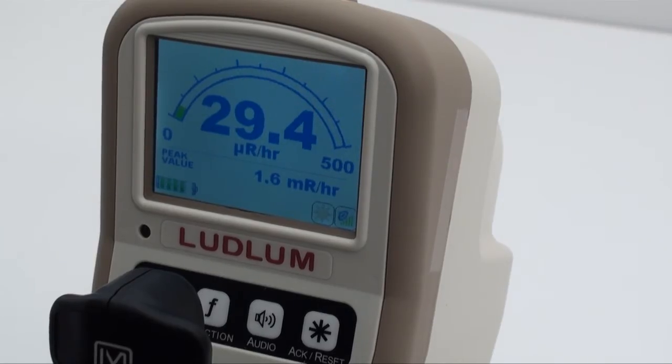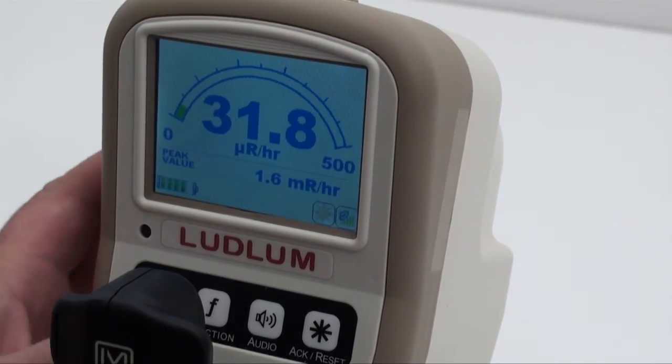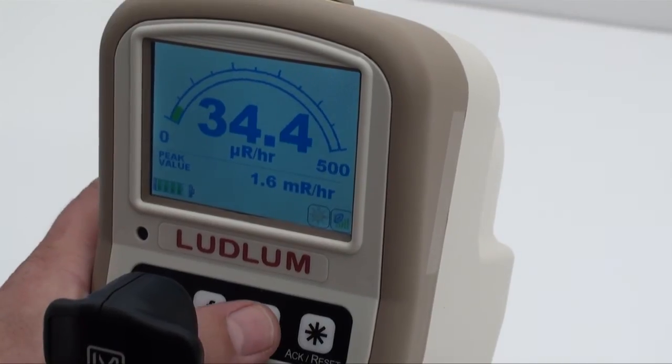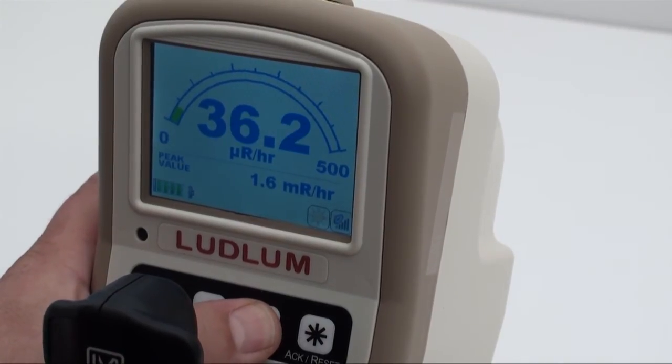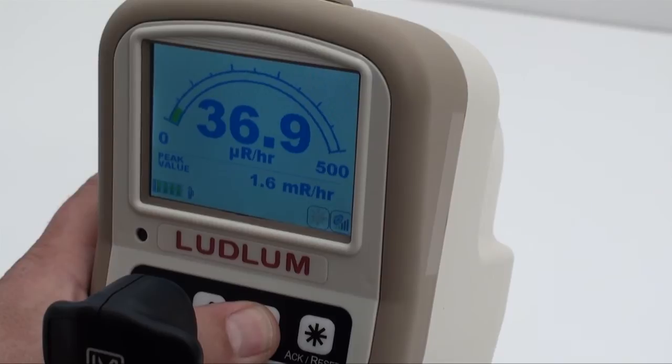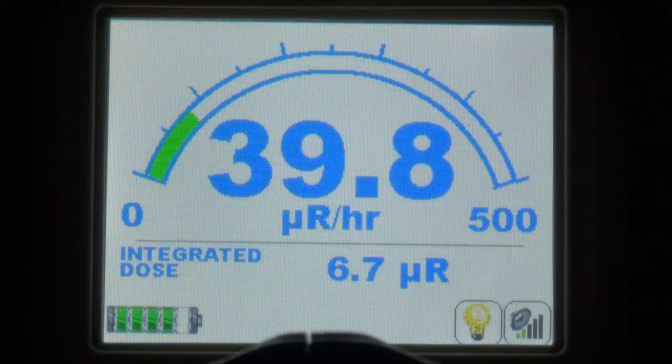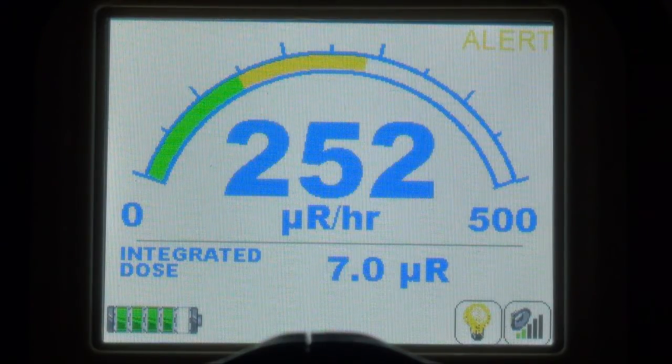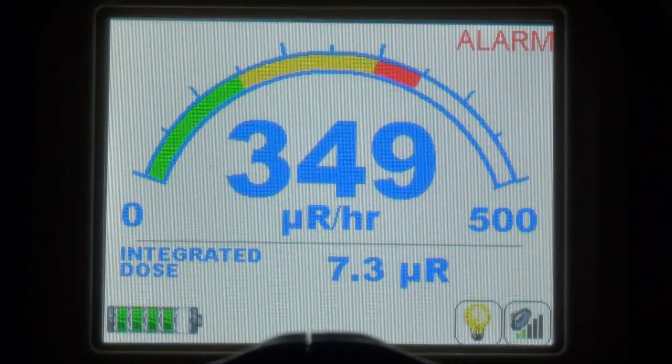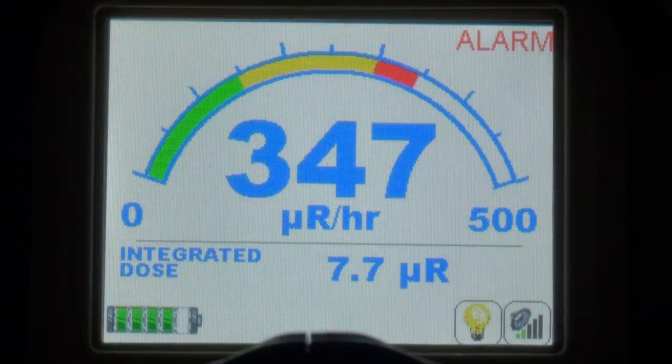Unlike most ion chambers, the model 9DP can output clicking sounds proportional to the radiation rate being measured. The audible output level is controlled by the operator. The instrument can be programmed with two levels of radiation alarms and are easily acknowledged by pressing the acknowledge button. Other non-programmable alarms include low battery and various detector failures.